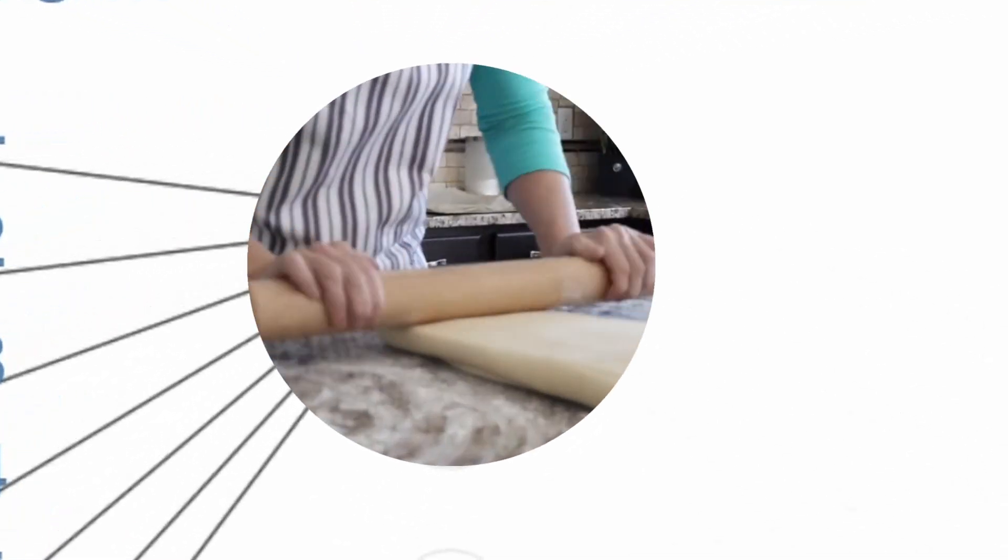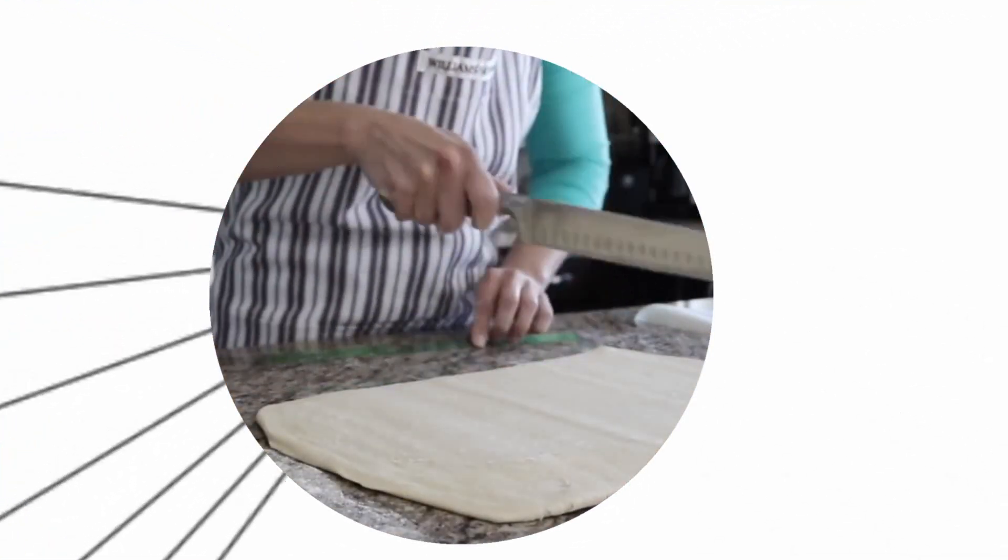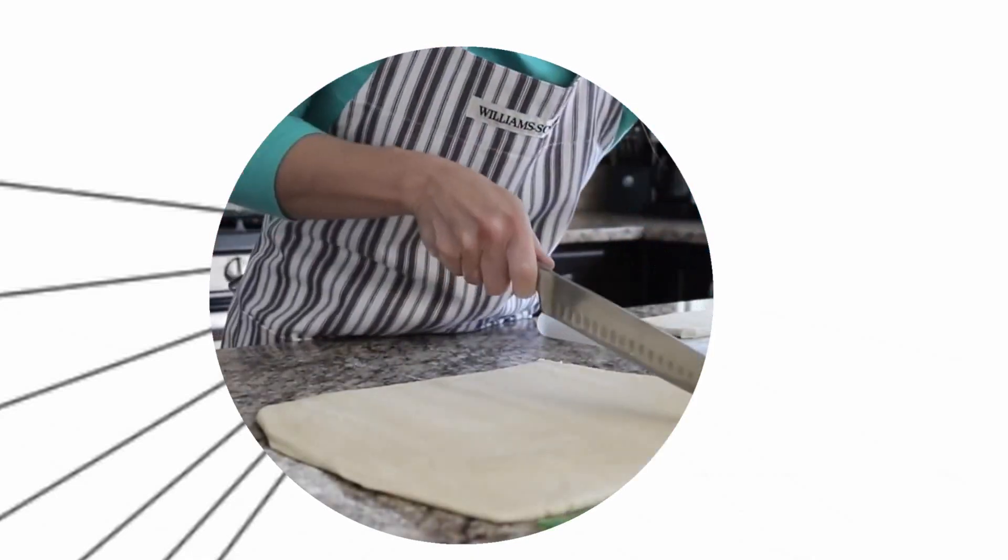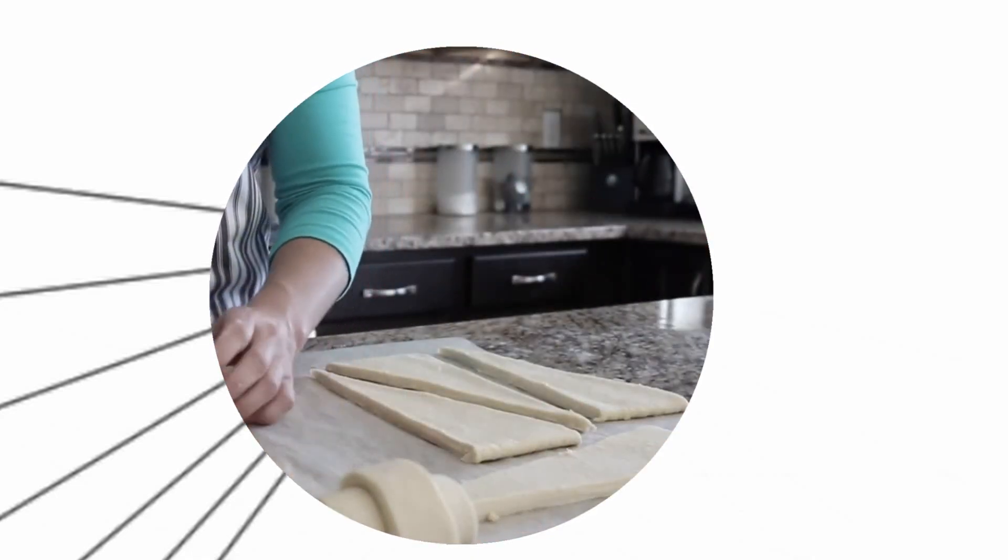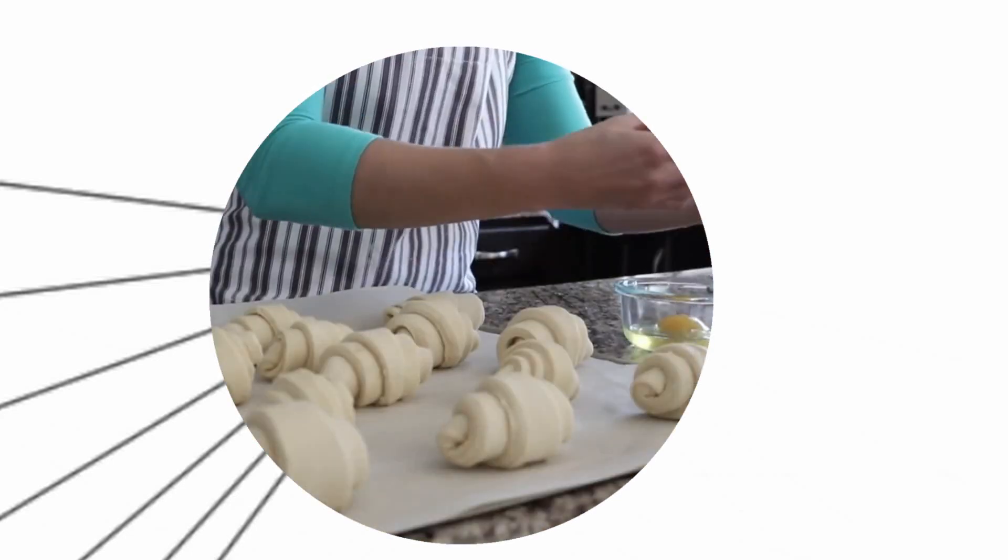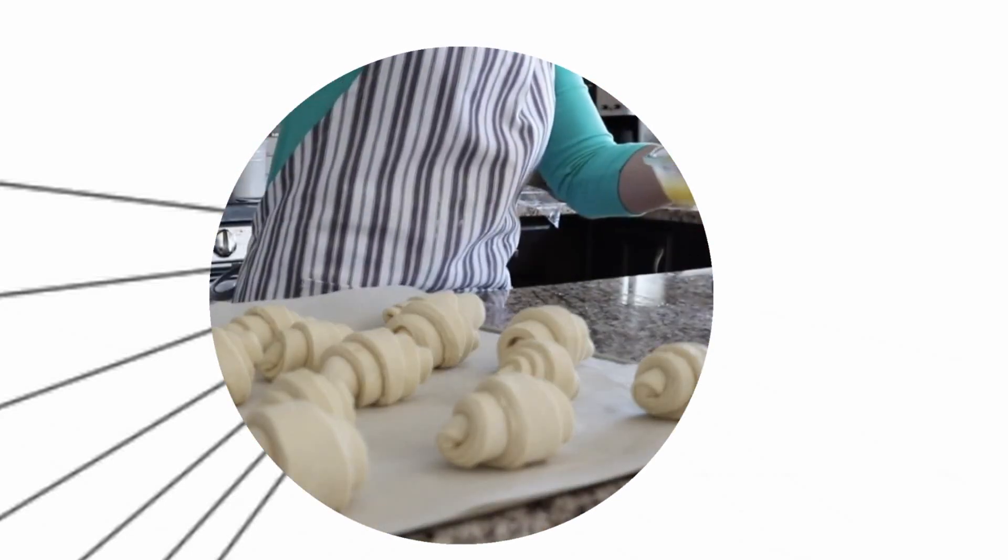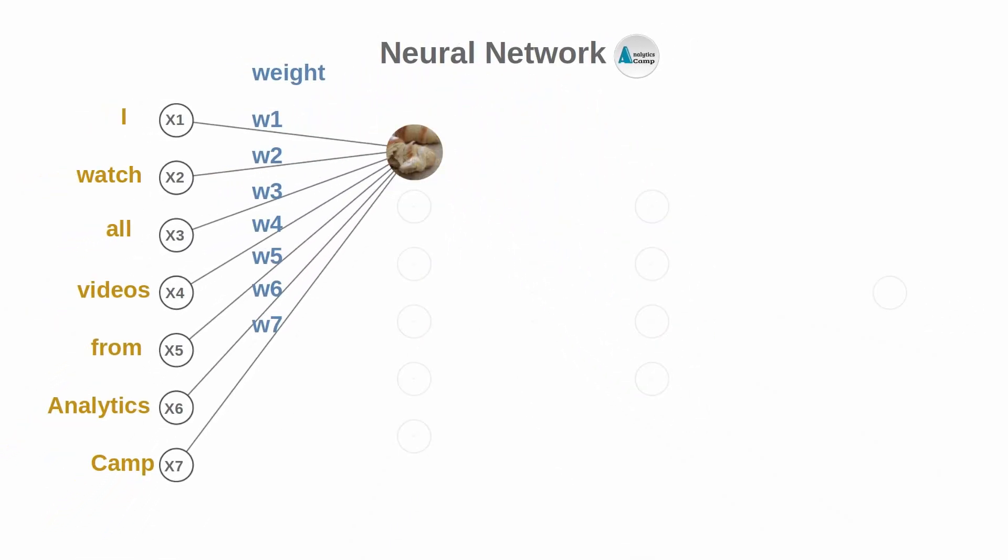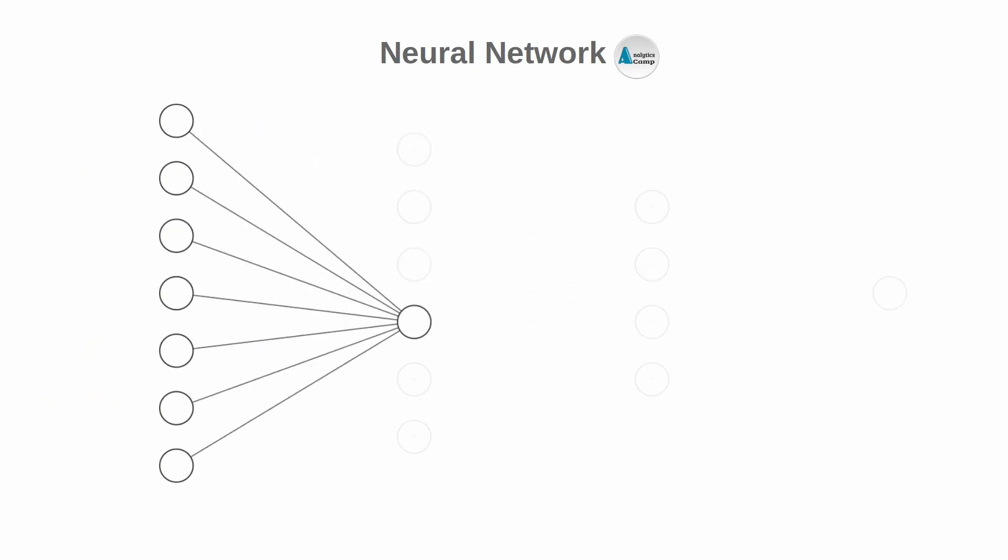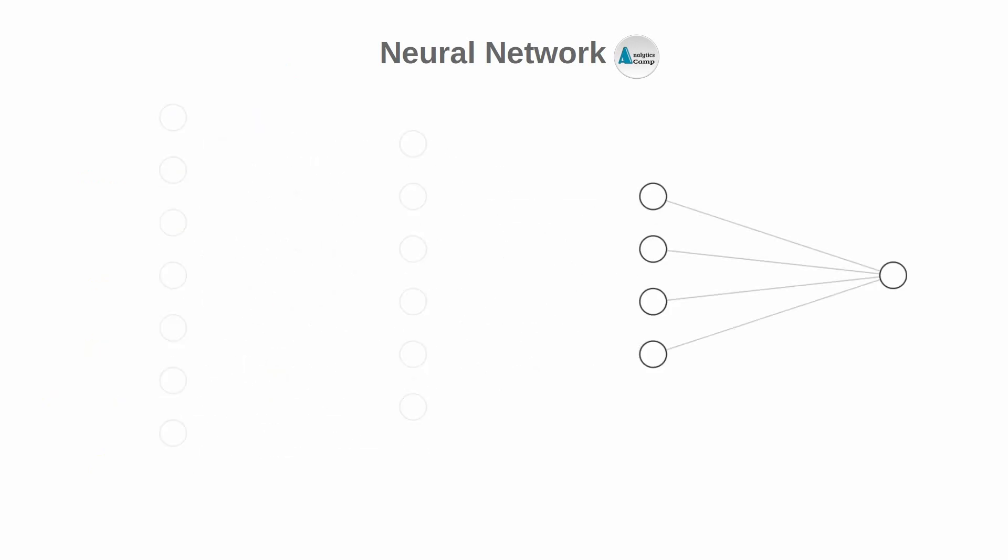Imagine you're trying to perfect a recipe for a fluffy croissant. You've got all the ingredients, but the key to success lies in the delicate balance of flour, salt, sugar, and butter. Too much of one, and the whole dish is thrown off. That's basically what's happening in the neural network, where the weights and biases are the secret ingredients that help the network come up with an accurate response.